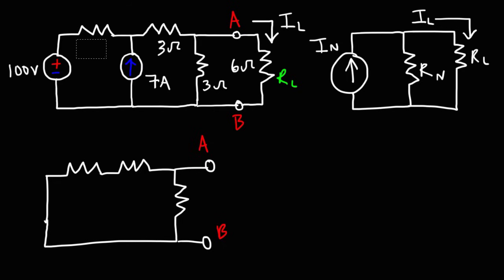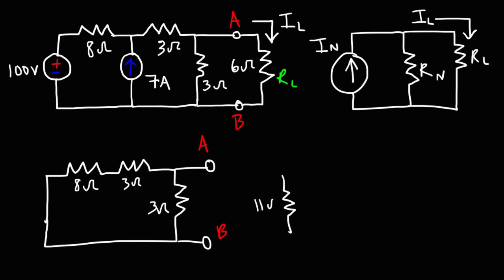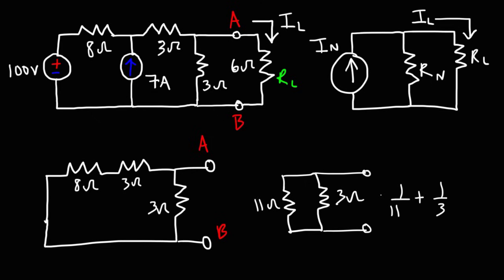This should not be a 5-ohm resistor but an 8-ohm resistor, so let me correct that. So we have an 8-ohm resistor, a 3-ohm resistor, and another 3-ohm resistor. These two resistors — the 8-ohm and one 3-ohm — are in series, so that's 11 ohms. Now we have an 11-ohm resistor in parallel with a 3-ohm resistor. The equivalent resistance is 1/11 + 1/3 raised to the minus 1, which gives 2.357 ohms for the Norton's resistance, the same as the Thevenin's resistance.